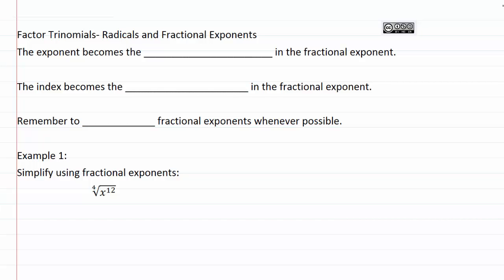So when we write it as a fractional exponent, the exponent becomes the numerator. Remember the numerator is the number on top in a fraction. So the exponent becomes the numerator in the fractional exponent and the index becomes the denominator, the number on bottom of the fraction in the fractional exponent.